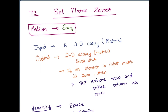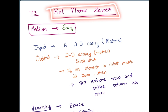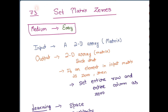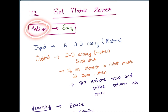Hey everyone, how are you? In this video, we are going to solve the LeetCode problem of the day and the problem is Set Matrix Zeroes. The problem number is 73 and the problem category is medium level, but once you watch this video and understand the problem and the solution approach, this will be very easy for you.